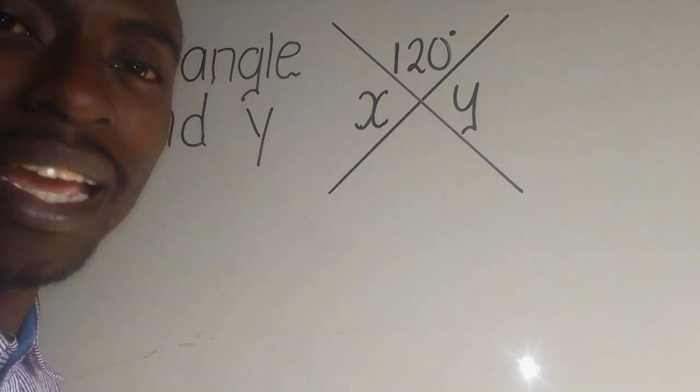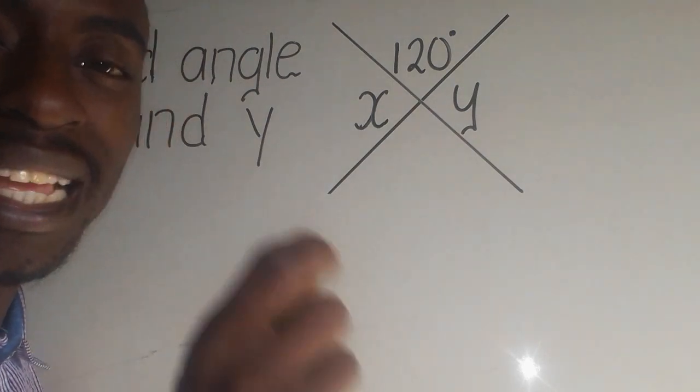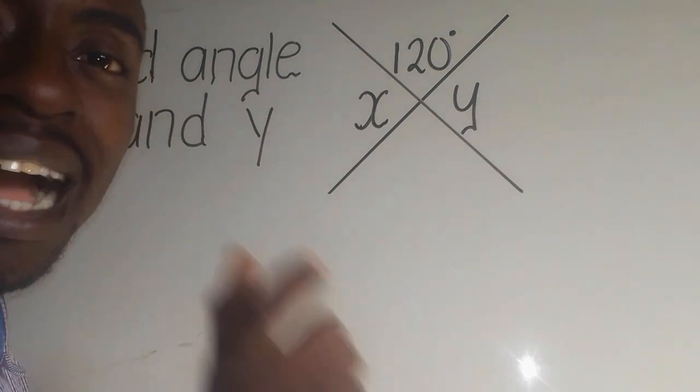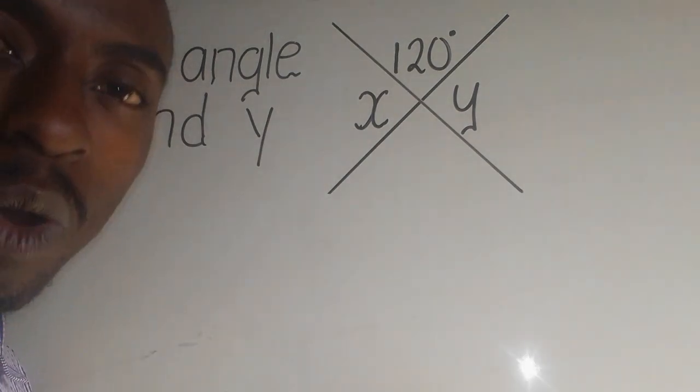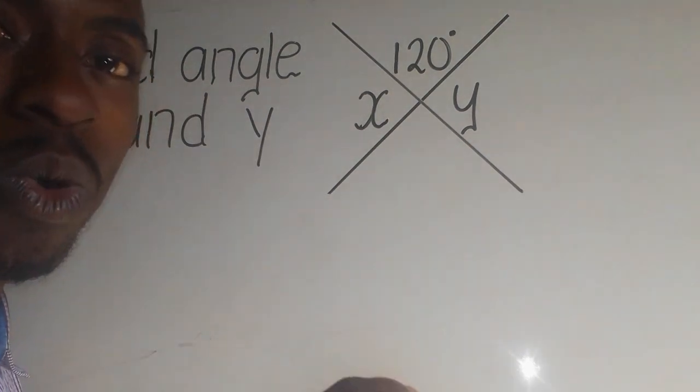But here, we are talking about what you call vertical angles. Because vertical angles, these are opposite angles which are equal, which are mainly formed by the crossing of two or more lines.